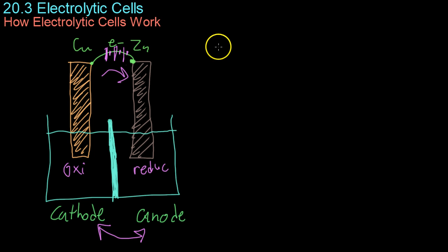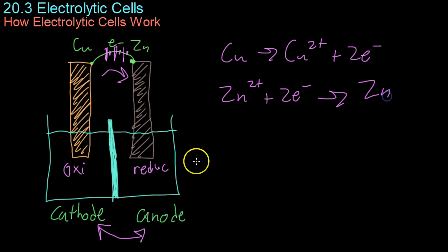Thus, we can write the cathode and anode reactions as copper reacting to form its ion and two electrons, and the zinc in solution then receiving those electrons to form solid zinc.